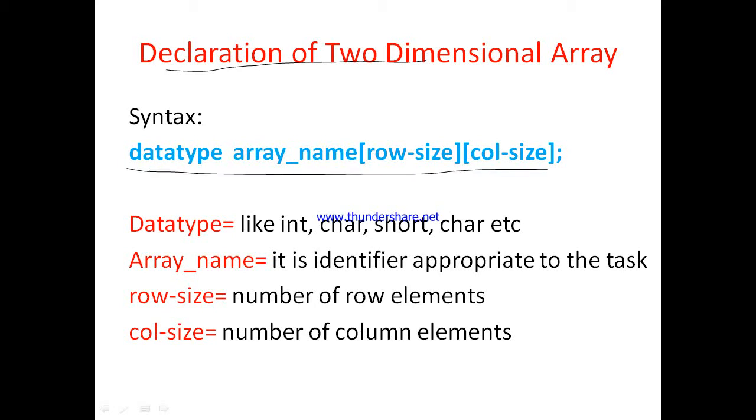Here first is data type, array name, row size and column size. Data type indicates the type of element that should be stored in array. It may be int, char, short, like that.